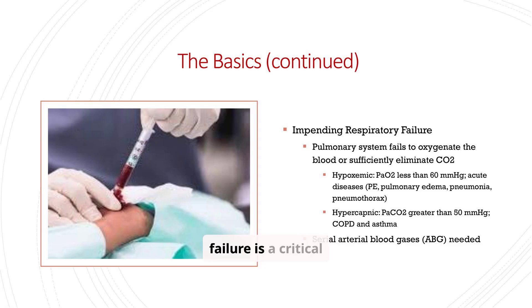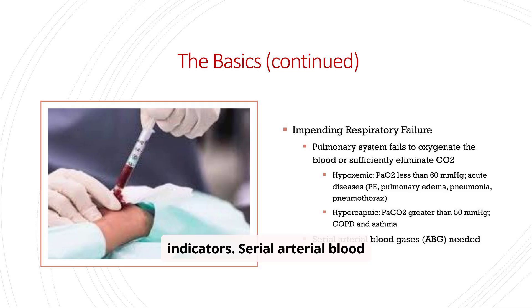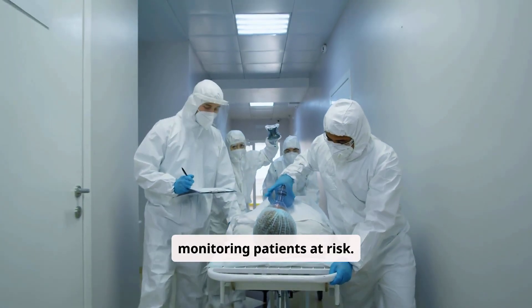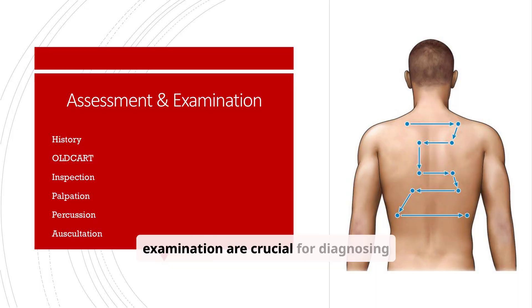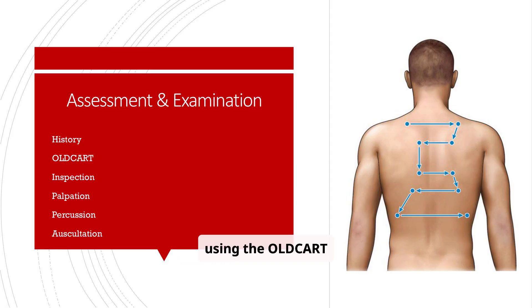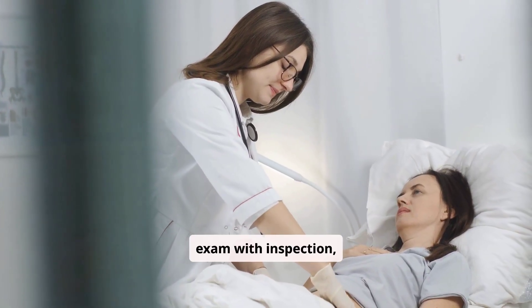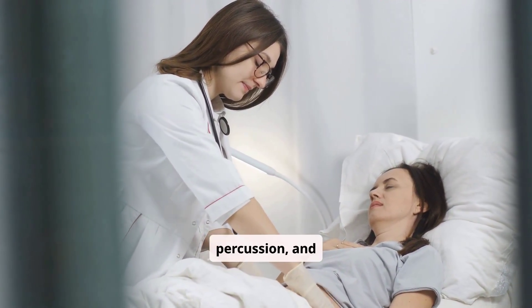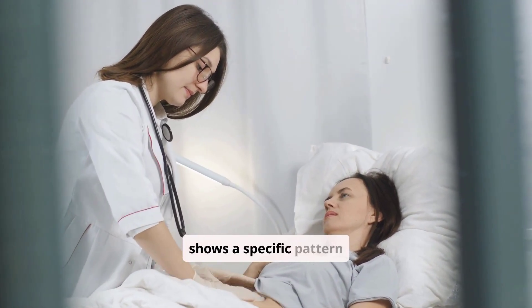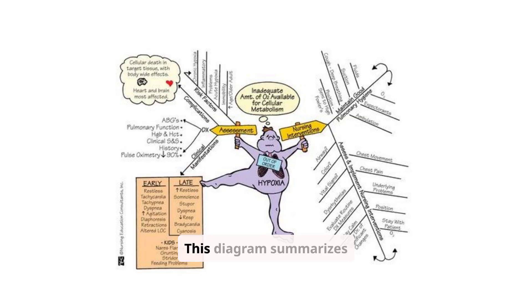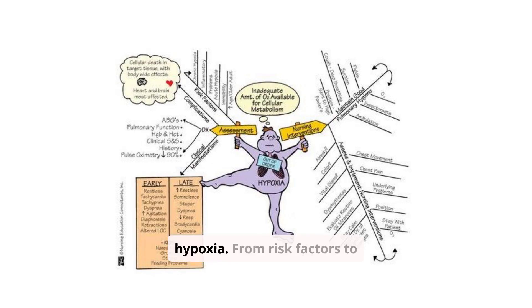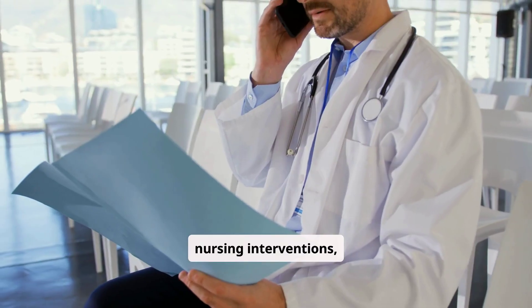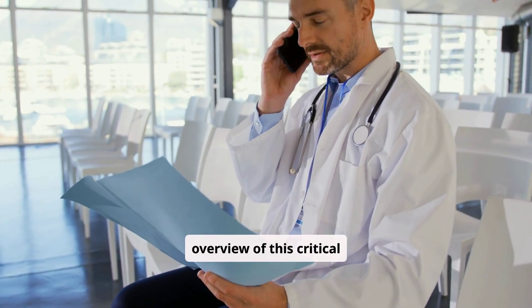Impending respiratory failure is a critical concern. Hypoxemia and hypercapnia are key indicators, and serial arterial blood gases are essential for monitoring patients at risk. Assessment and examination are crucial for diagnosing respiratory conditions. This includes taking a thorough history using the OLD CART mnemonic, and performing a physical exam with inspection, palpation, percussion, and auscultation. A diagram summarizes the causes, symptoms, and treatments for hypoxia, from risk factors to clinical manifestations and nursing interventions.